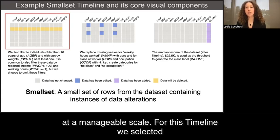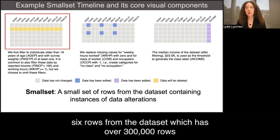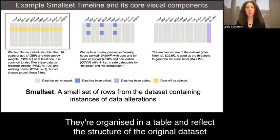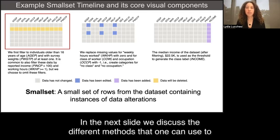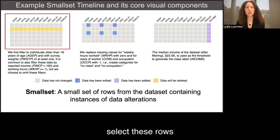For this timeline, we selected six rows from the dataset, which has over 300,000 rows. They're organized in a table and reflect the structure of the original dataset. In the next slide, we discuss the different methods that one can use to select these rows.